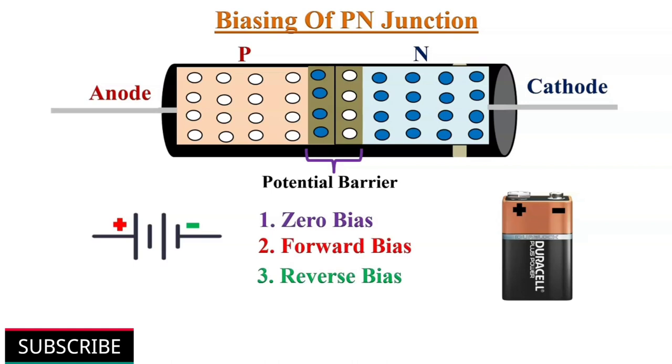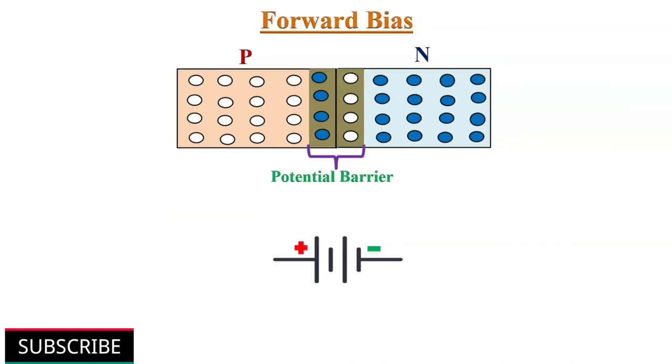Zero bias means no external voltage is applied to the p-n junction diode.